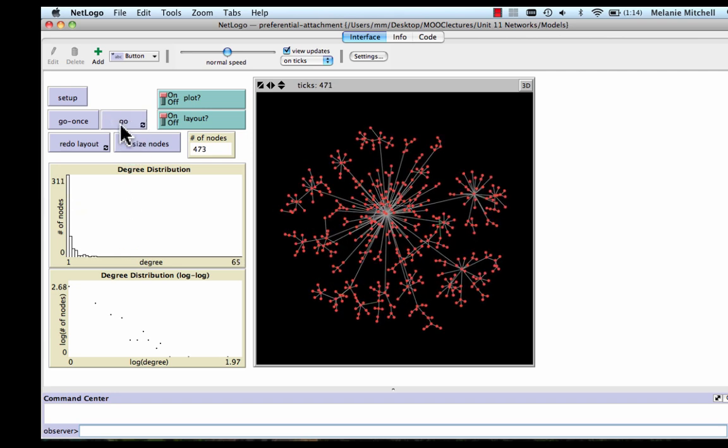So this model is more to look at rather than to actually do experiments with. But I recommend downloading it from the course materials page and playing with it. The interesting thing here is that such a very simple model of network formation can produce networks that look very much like real-world networks. So there might be something to this hypothesis of how these kinds of networks form.